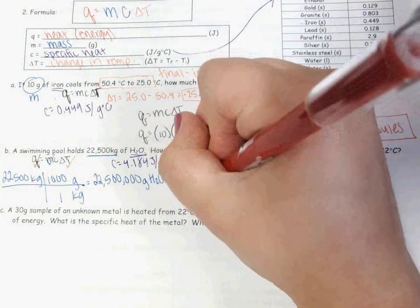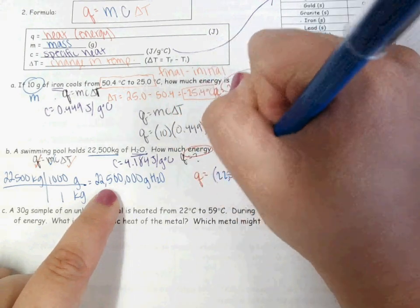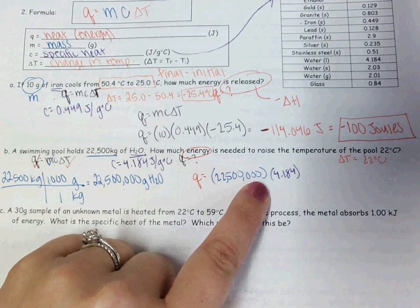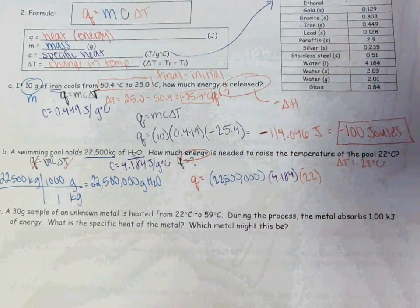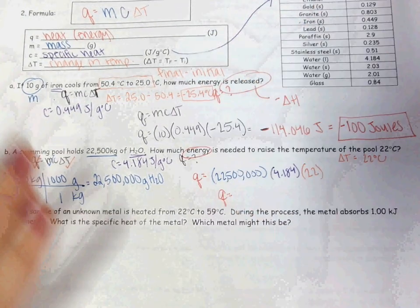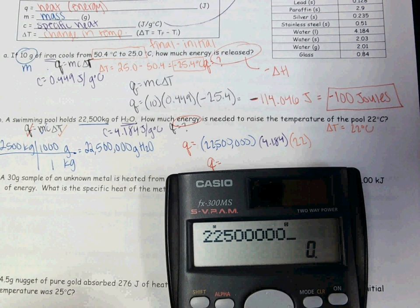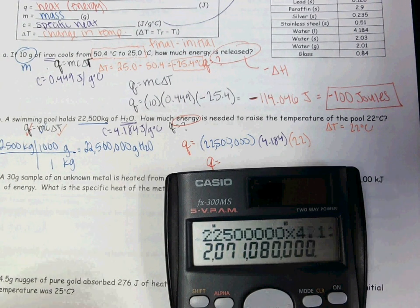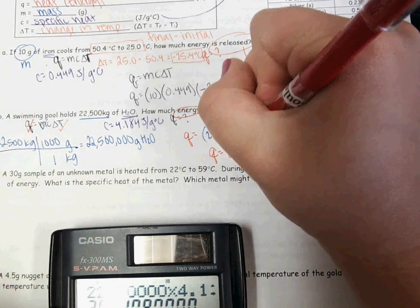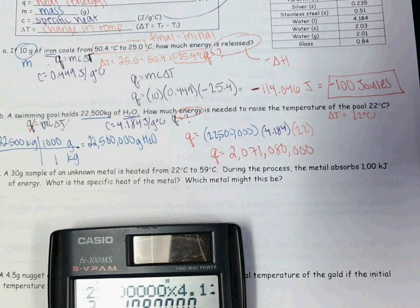So my Q value equals my mass, which is 22,500,000, times my C value of 4.184, times my delta T value of positive 22. Since there are no negatives in this entire equation, my final answer should definitely be positive. So Q equals 22,500,000 times 4.184 times 22, which gives me 2,071,080,000.